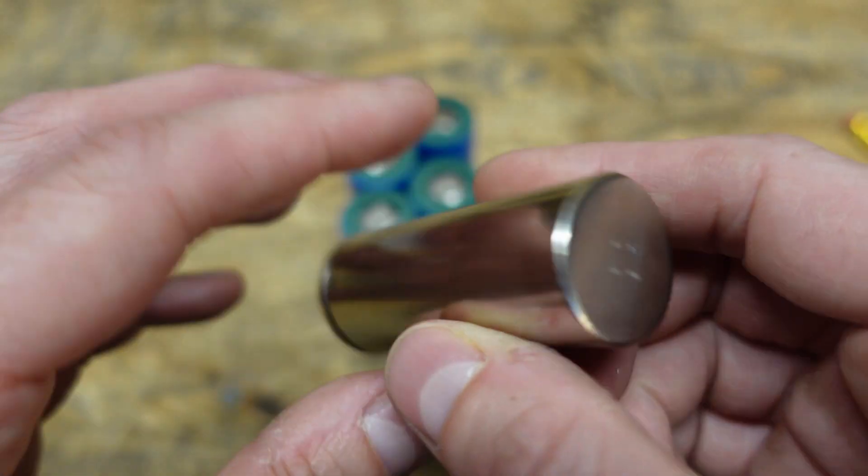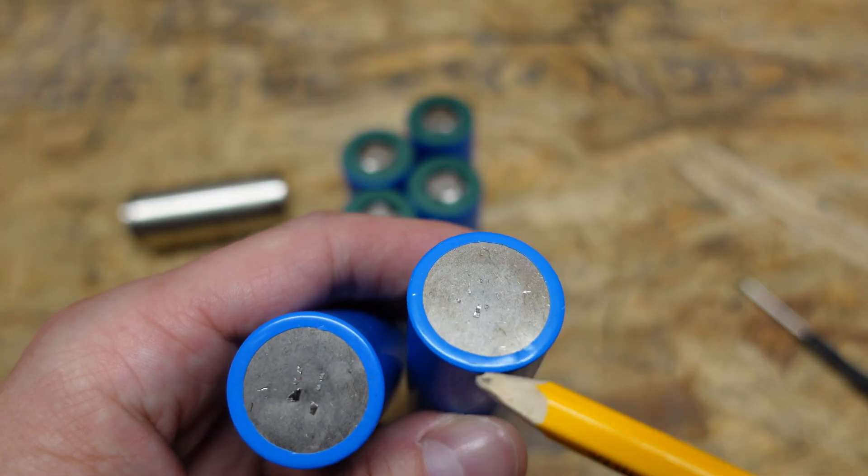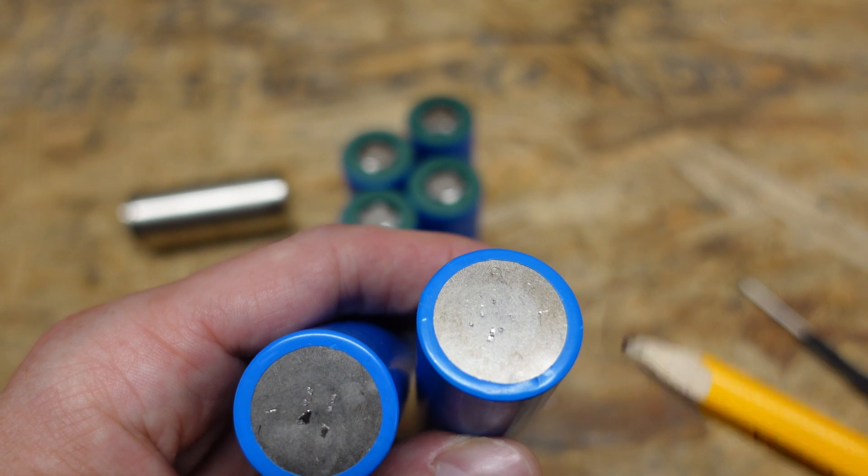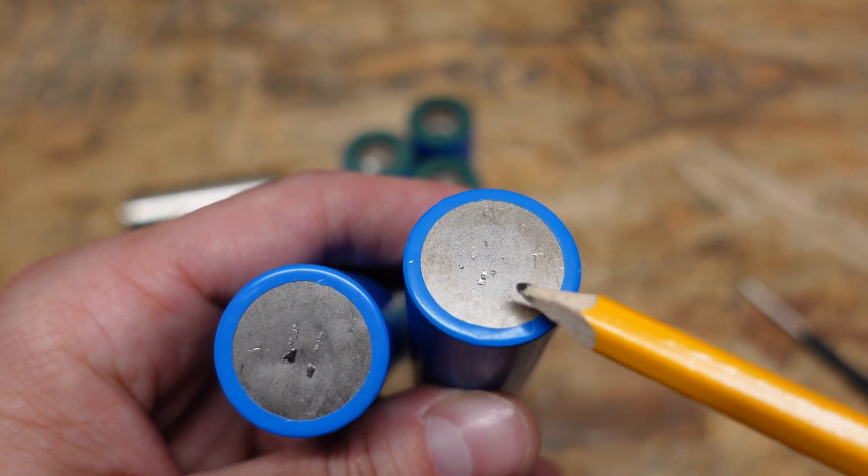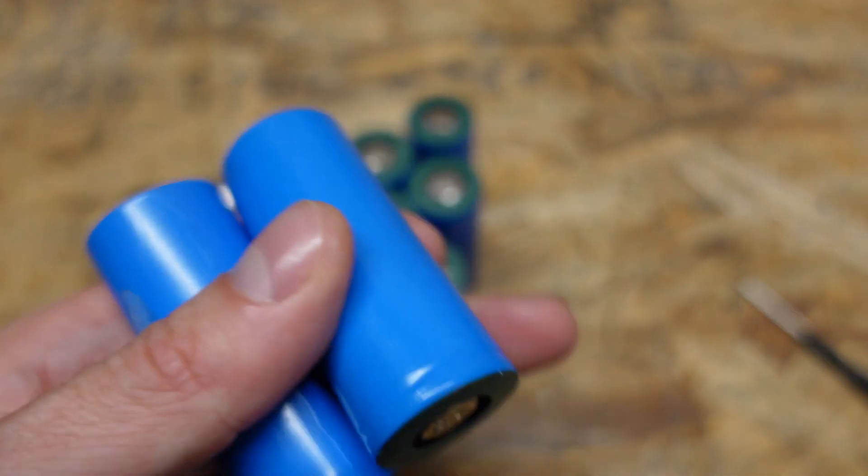So otherwise they look like great cells. I don't see any signs at the weld points that they were used. Typically in a used cell you can see the weld points from the prior application. However each one only has three pairs of weld points which is exactly what we would expect. I don't see anything that may have been left over from before.